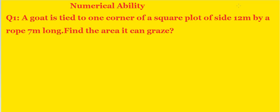Question: A goat is tied to one corner of a square plot with side 12 meters by a rope 7 meters long. Find the area it can graze.